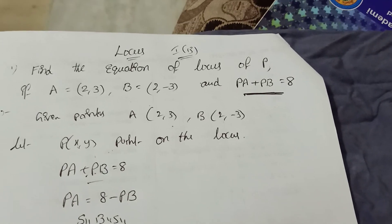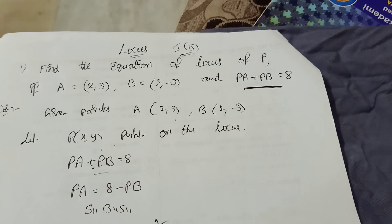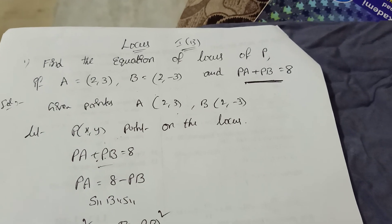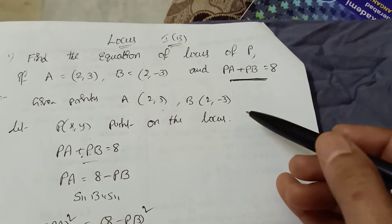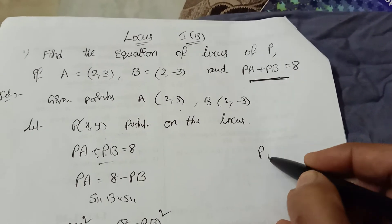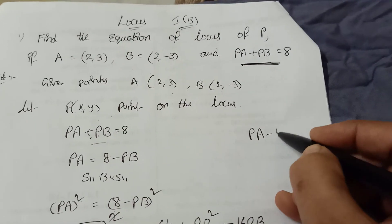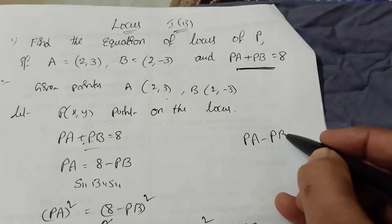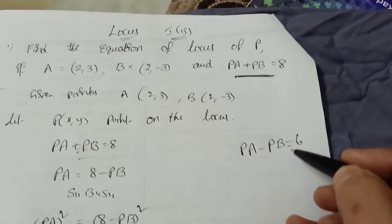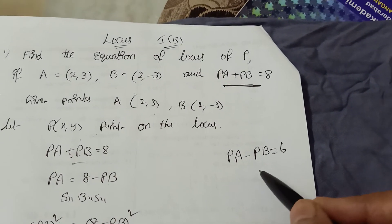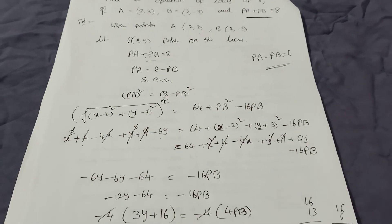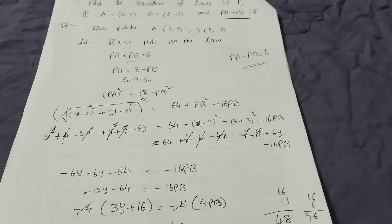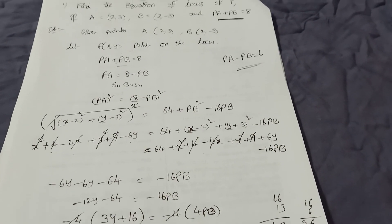I already uploaded one video on locus — check that. This same process applies whether PA plus PB equals 6 or PA minus PB is given — same method only. Don't lose the marks. Thank you for watching my channel.